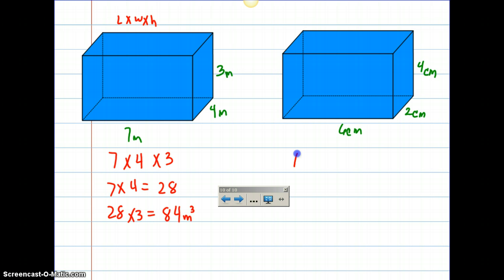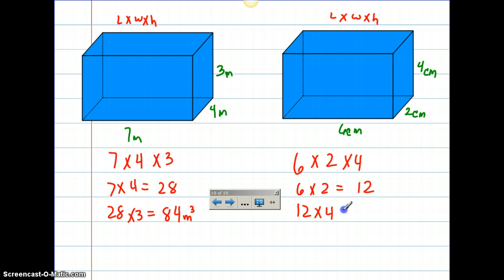Last example, six times two times four. Length times width times height. So, six times two is 12. And 12 times four is going to be 48 centimeters. And it's going to be cubic centimeters.